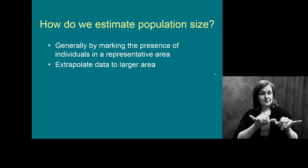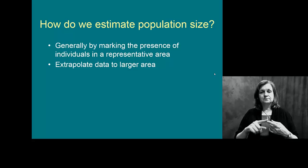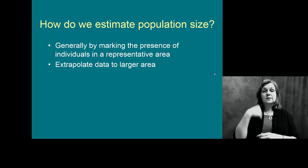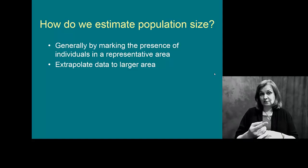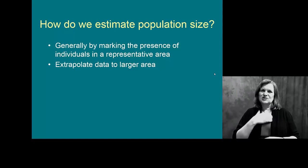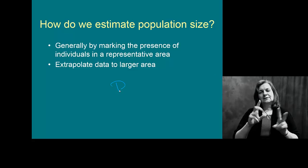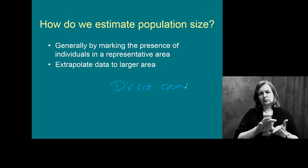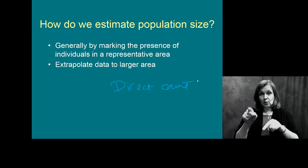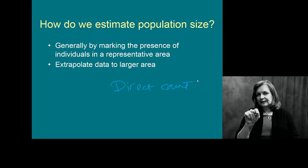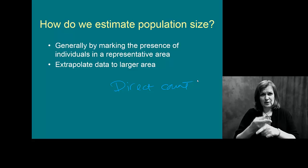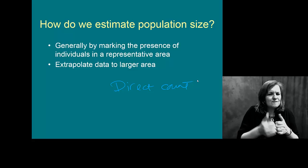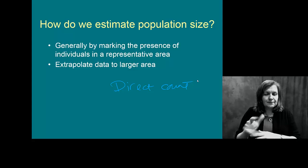We typically look at estimating population sizes on a couple of different levels. If it's a large organism — so if I asked you to count every giraffe on campus — it would be a fairly easy thing for you to do. There aren't many of them, so that would be something we refer to as a direct count. But if I asked you to go to the mall and count every ant outside in the parking lot, it'd be a much larger feat.